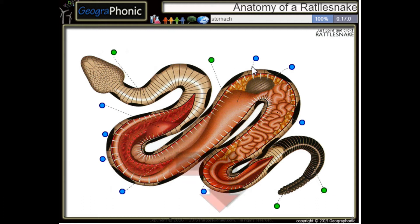This is a rib, a single rib. This is the stomach of the rattlesnake.